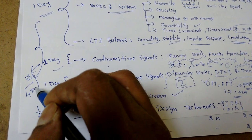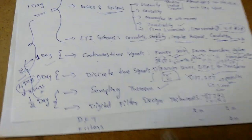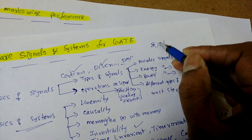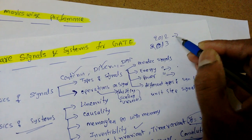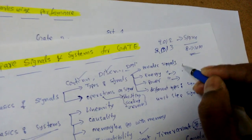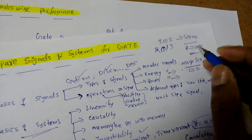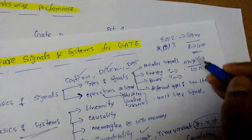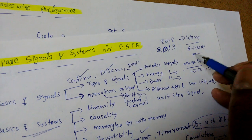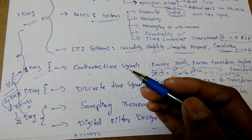To prepare Signals and Systems in total, three and a half days is sufficient — we can extend to four days, and the maximum should be seven days. Previously up to 2012–2013, Signals and Systems was a separate subject worth 8 to 10 marks. Now it is combined with Network Theory, and together they give 12 to 15 marks. The split between the two subjects varies across different GATE sets.